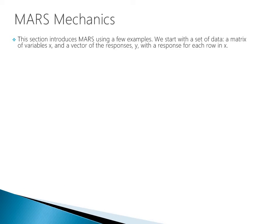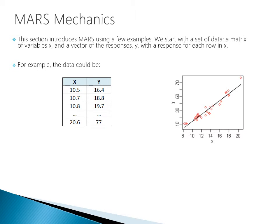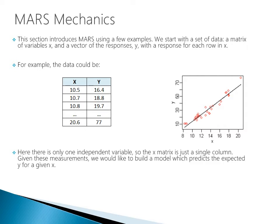This section introduces MARS using a few examples. We start with a set of data — a matrix of variables x and a vector of responses y, with the response for each row in x. Here there is only one independent variable, so the x matrix is just a single column. Given these measurements, we would like to build a model which predicts the expected y for a given x, so we are going to build a simple linear regression. The linear model for the above data is minus 37 plus 5.1x in this case.